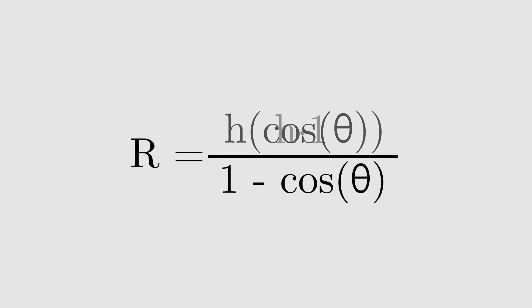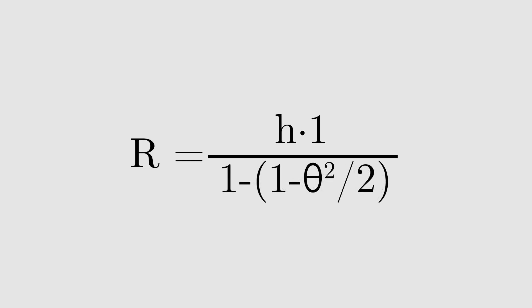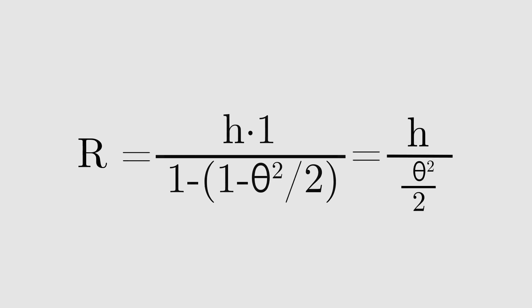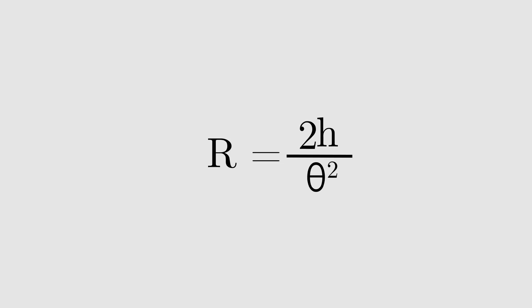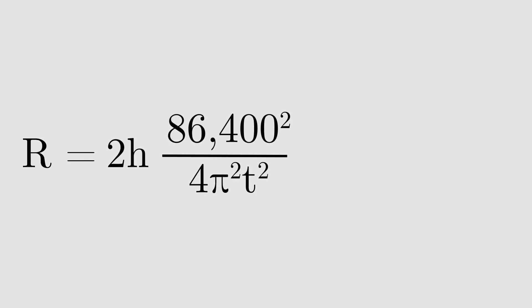So by replacing the top cosine with 1 and the bottom cosine with 1 minus theta squared over 2, we get r equals 2h over theta squared. Substituting in the value of theta from before produces the desired formulas.